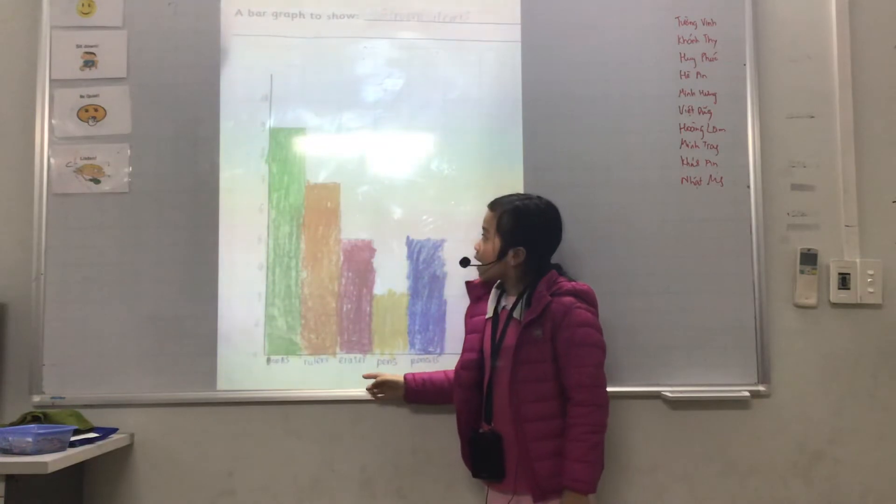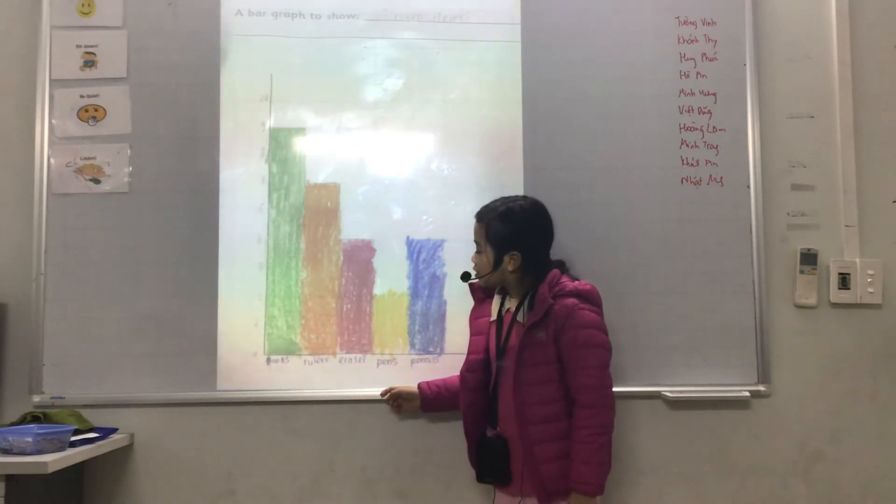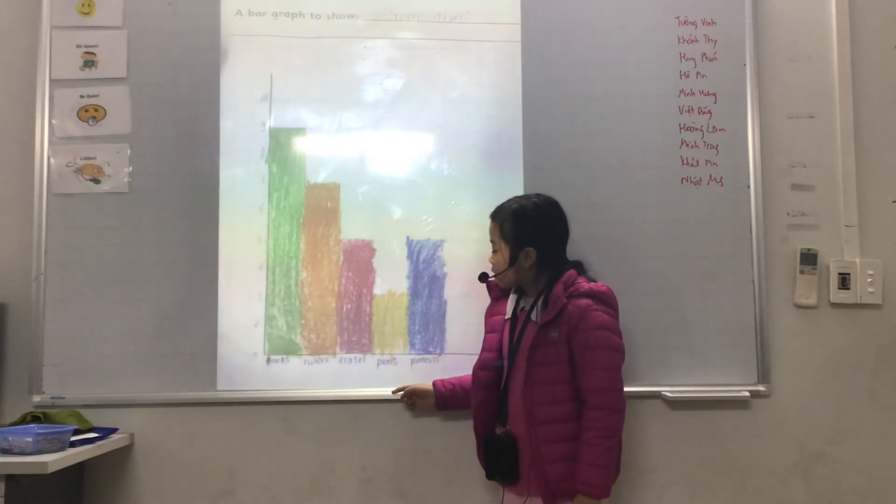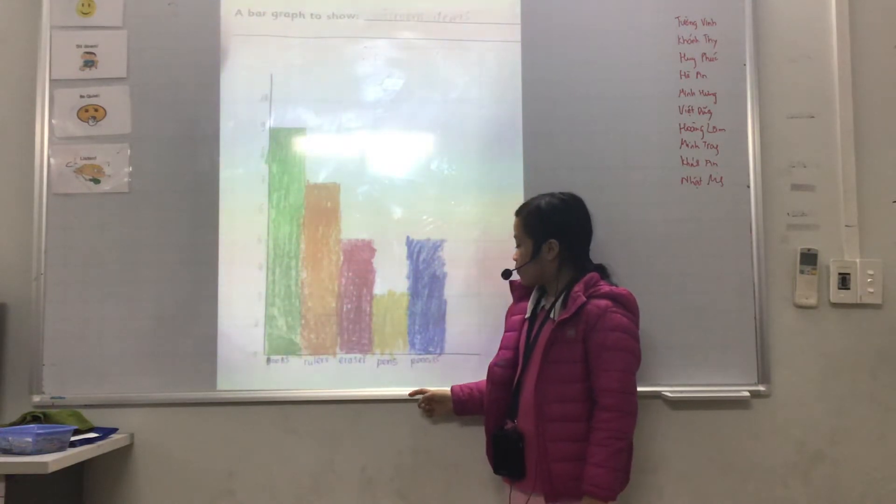There are 9 books, 7 rulers, 5 erasers, 3 pens, and 5 pencils.